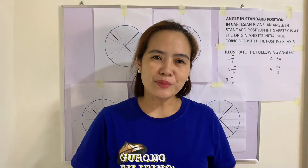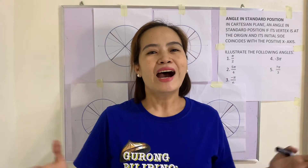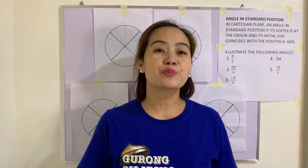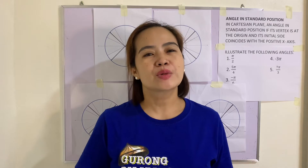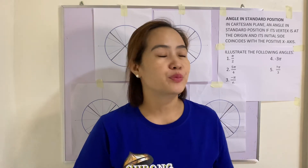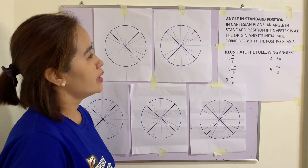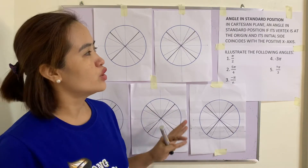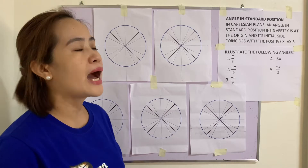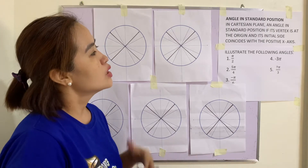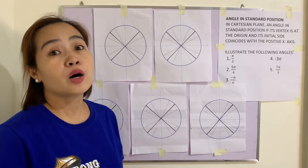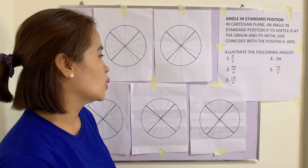Good day everyone, welcome back to my channel. Our topic for today is illustrating angles in standard position and coterminal angles. An angle is in standard position if its vertex is at the origin and its initial side coincides with the positive x-axis.